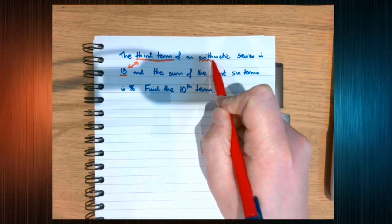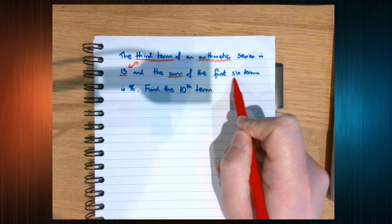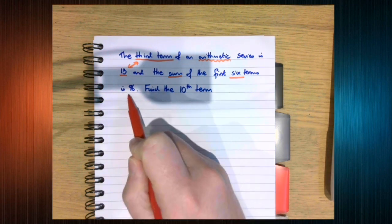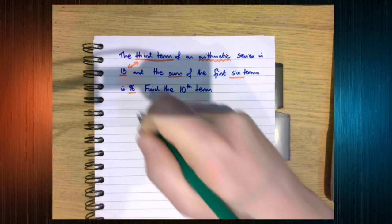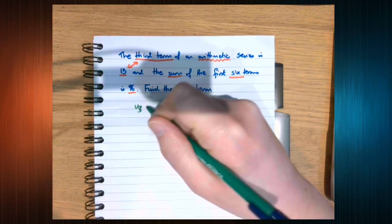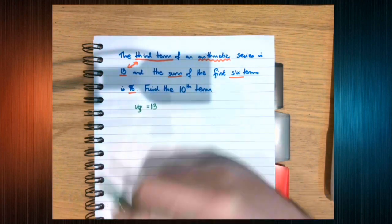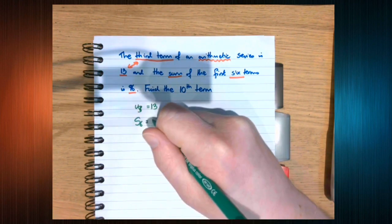We know the sequence is arithmetic. And we know the sum of the first six is 96. So what we're going to want to do is write down that information in our notation. We know that the third term u3 is 13. And we know the sum of the first six S6 is 96.